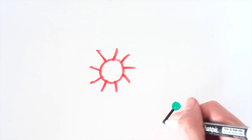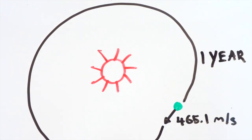Space is so big that Earth can travel 465.1 meters every second, but it takes us a whole year to get around the sun just once.